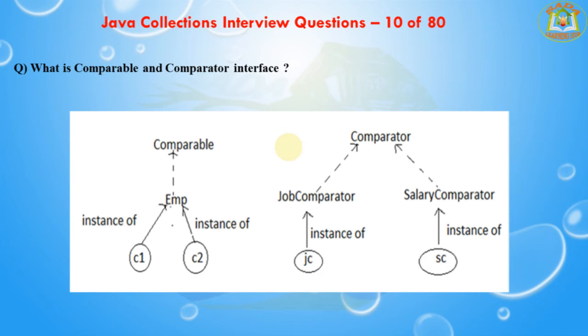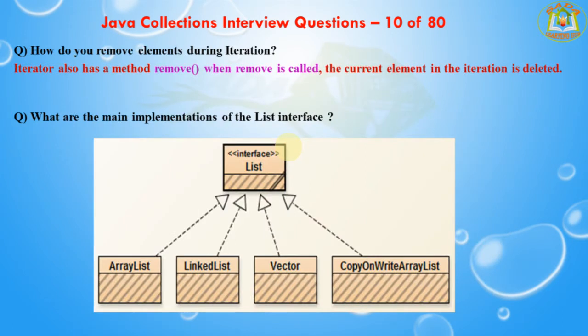The next question: How do you remove elements during iteration? The Iterator also has a remove() method. When remove() is called, the current element in that iteration is deleted.